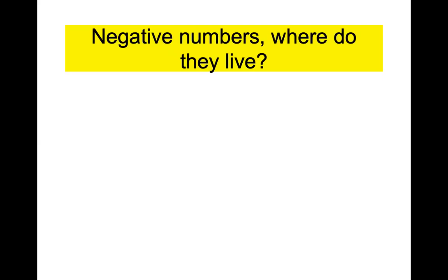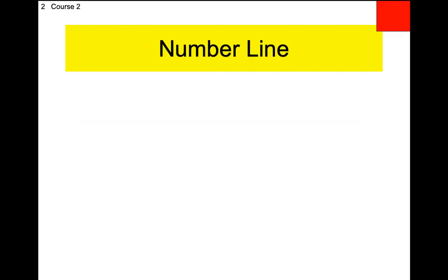Where do negative numbers live physically? To the left of zero on a number line. So let's draw a number line. How do I know it's a line? Lines, by definition, are straight — you'll learn that in geometry. Without arrows, we call it a segment. With arrows, it's a line. The arrows indicate that it goes on forever and never stops. The arrows indicate it goes on forever.